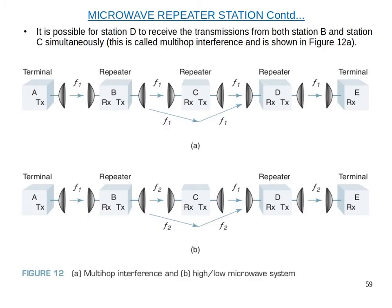Each station in turn alternates from a low band to a high band transmit carrier frequency, as shown in the figure. If a transmission from station B is received by station D, it will be rejected in the channel separation network and cause no interference.